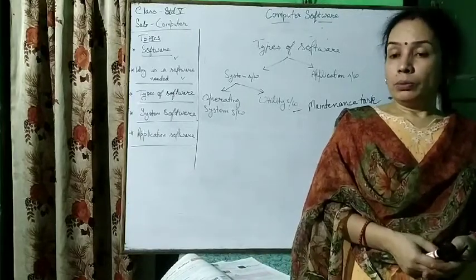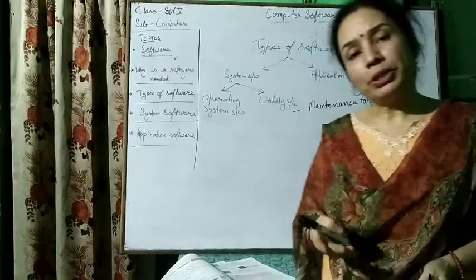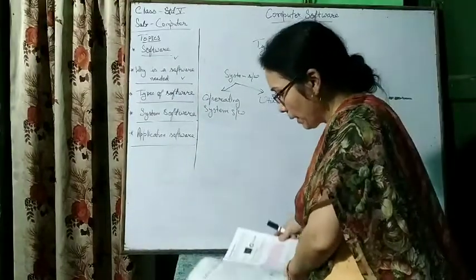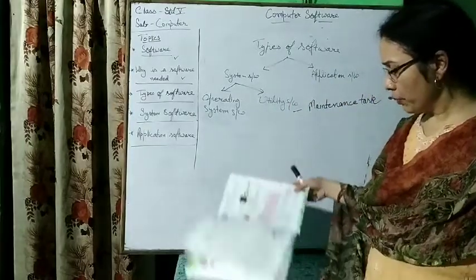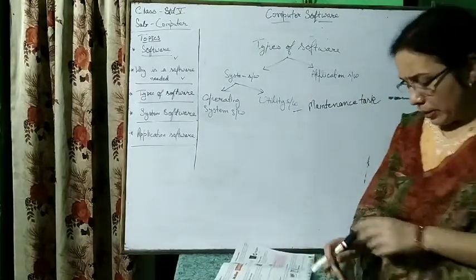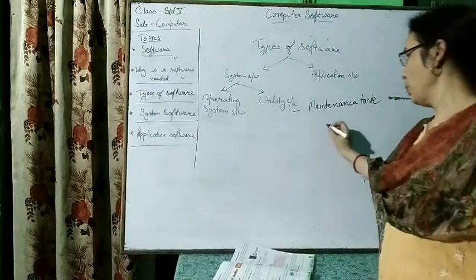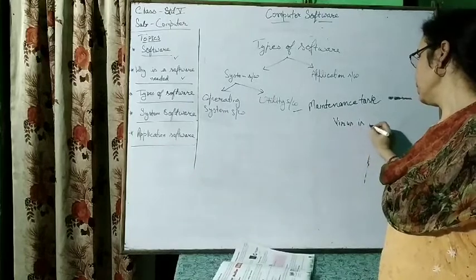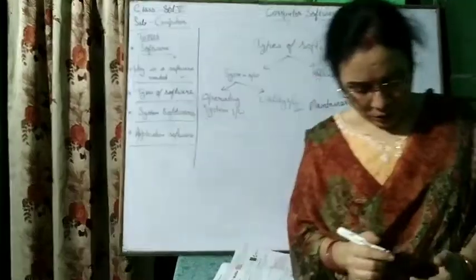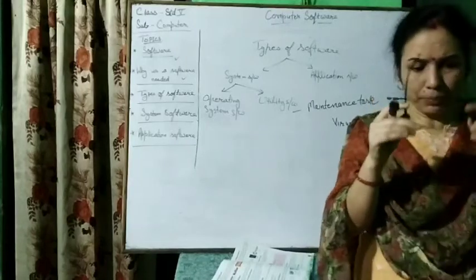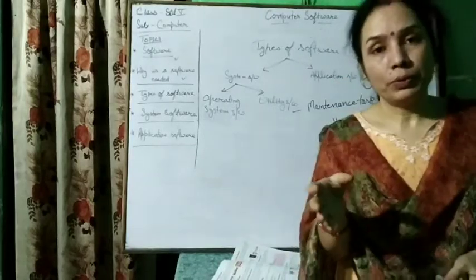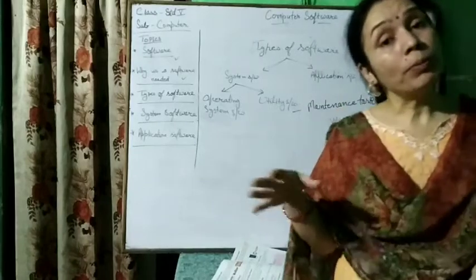Three utility softwares are given in your book and we will discuss them one by one. The first one is antivirus utility software. Virus is a software — it is not a type of coronavirus or biological virus. Computer virus is a software which causes problems in the computer system.